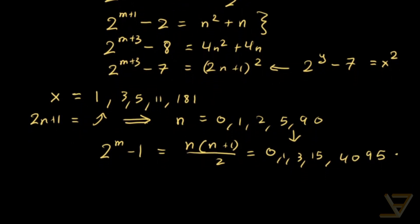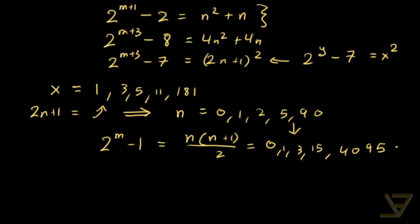And these, in addition to being called triangular Mersenne numbers, they're also called Ramanujan-Nagel numbers.